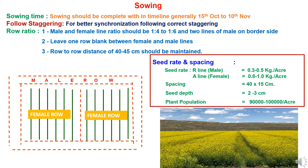Regarding sowing: the correct ideal sowing window period for mustard hybrid seed production is 15th October to 10th November. As mustard is a rabi crop, this sowing window supports the crop for its agroclimatic requirements and best suitability for growth and yielding. In hybrid seed production, using two parental lines — A-line and R-line — correct following of staggering is recommended. Staggering refers to the differential sowing of male and female lines to match correct flowering time synchronization, as recommended by the breeders.